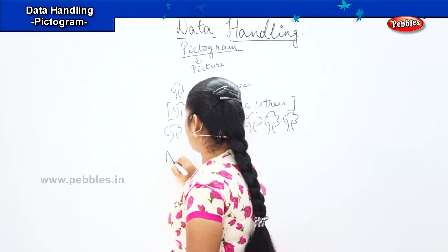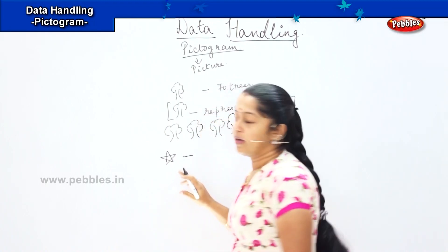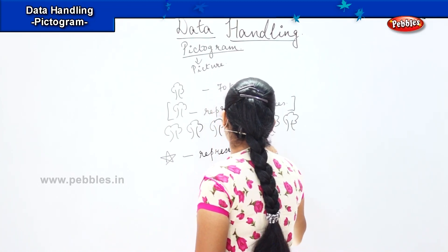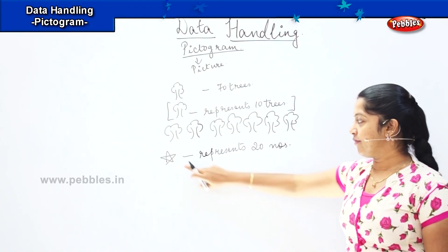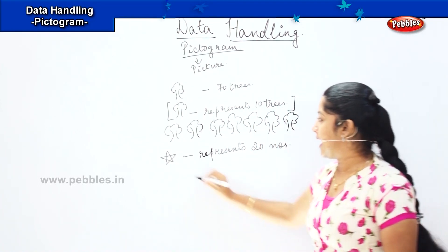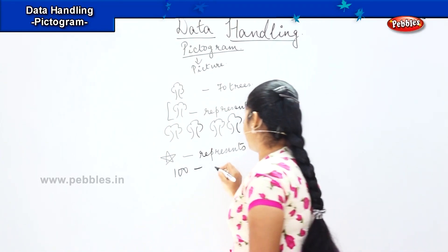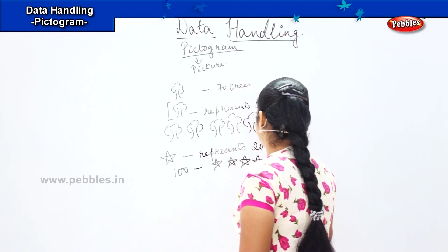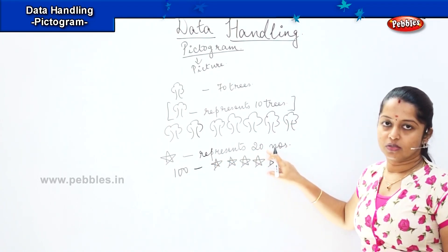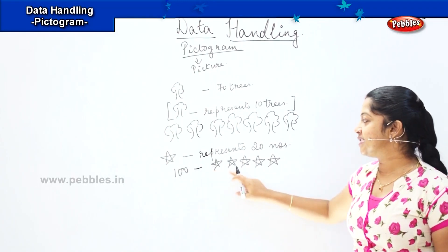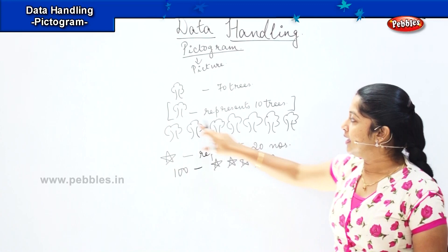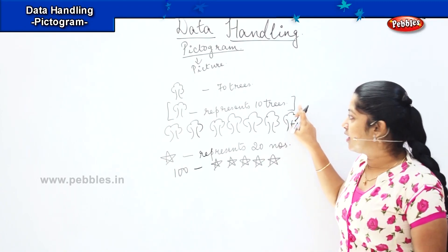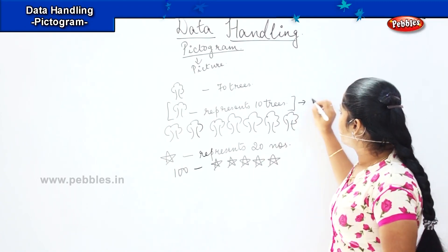Similarly, if I draw a star, and I say that one star represents 20 numbers — if I have to draw 100 stars, I will draw only 1, 2, 3, 4 and 5, because one star is representing 20 numbers. So to draw 100, it is easy to draw only 5 stars. This picture telling us how many numbers it represents is called the key detail.